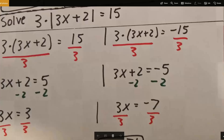So first we divide by 3, and we get 3x plus 2 is equal to 5, since 15 divided by 3 is 5. Then subtract 2, and we get 3x is equal to positive 3. Divide by 3, and x is equal to 1.